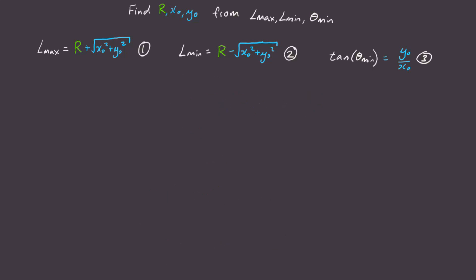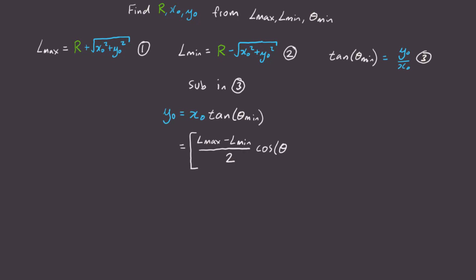But what about y0? Let's look at equation three and sub our result for x0. Now cosine times tan is equal to sine. And so that means that y0 is equal to lmax minus l min divided by two times by sine theta min.